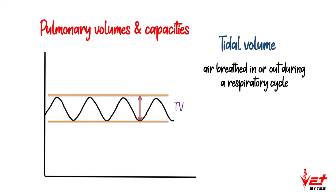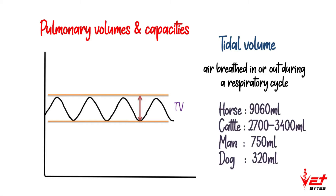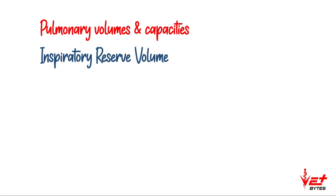Tidal volume is the volume of air breathed in or out during a respiratory cycle. This tidal volume differs for different species: in horses the tidal volume is 9 liters, in cattle it is around 2.7 to 3.4 liters, in man 750 ml, and in dog 320 ml.